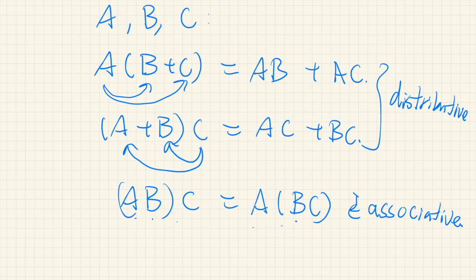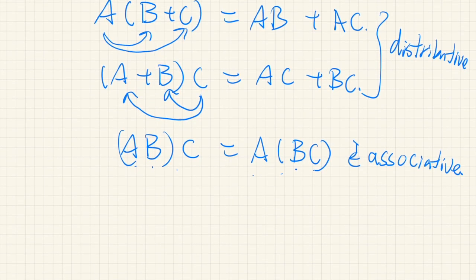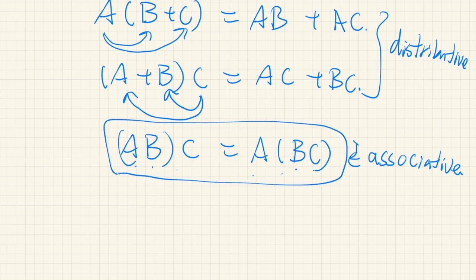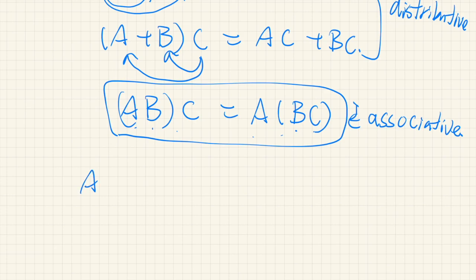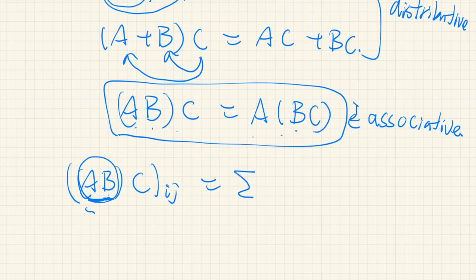Proving this is quite straightforward — you just apply the definitions of addition and multiplication of matrices, but it can be cumbersome, so you should cleverly manipulate all the indices involved. Let's see this one. So AB times C: its IJ element — first, AB is a matrix, it's a product of A and B, so the product between this matrix and C is computed as follows.